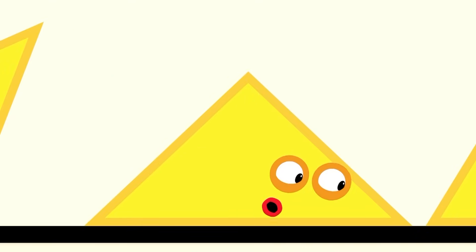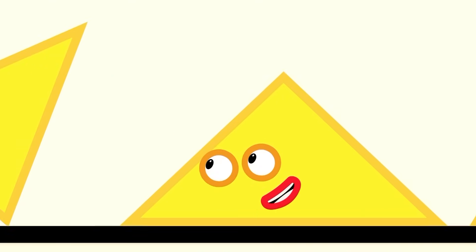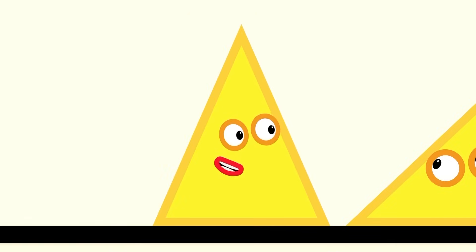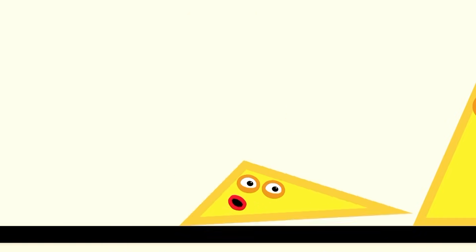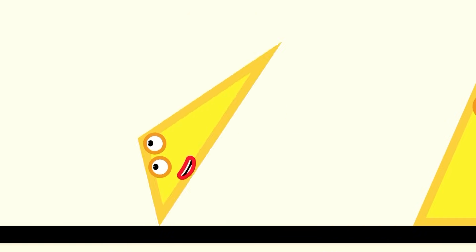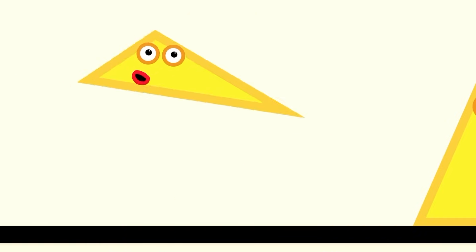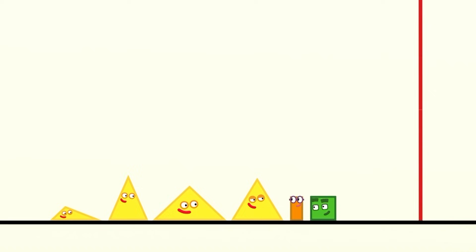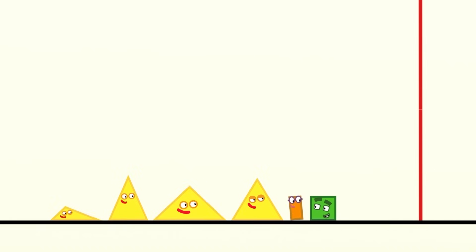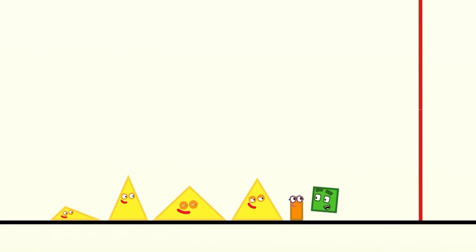Some of us are wide. Some of us are narrow. And some of us are rocky! What matters is: one, two, three — three straight sides. And one, two, three — three corners. Means a triangle!